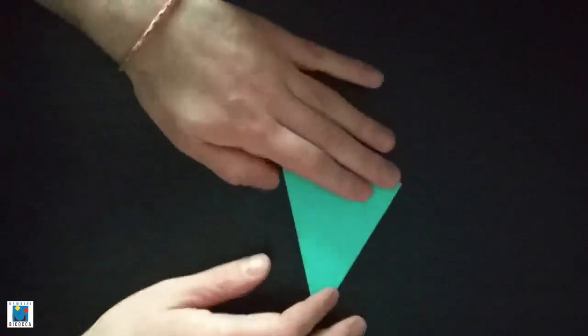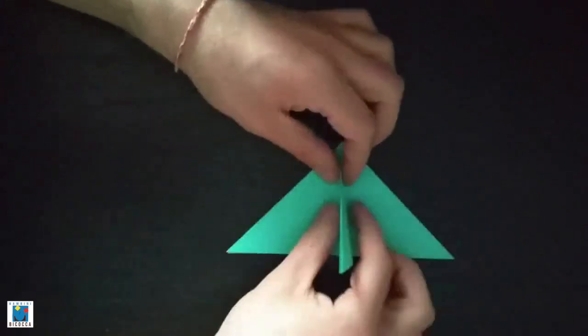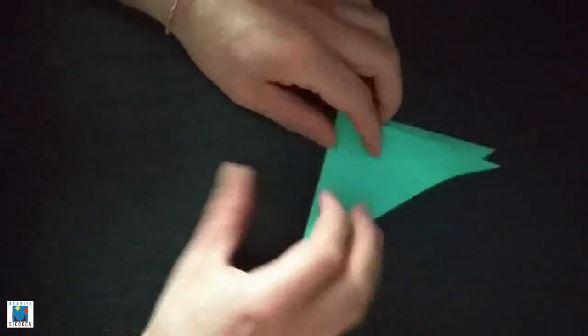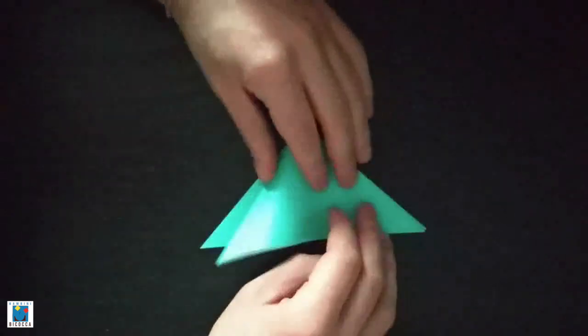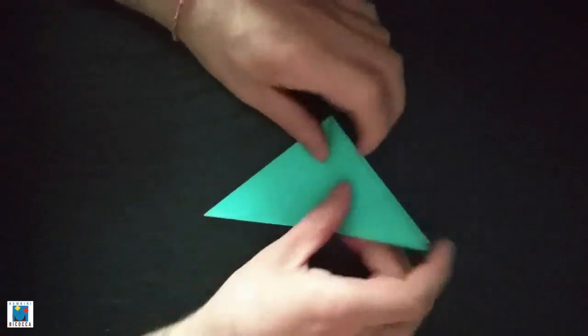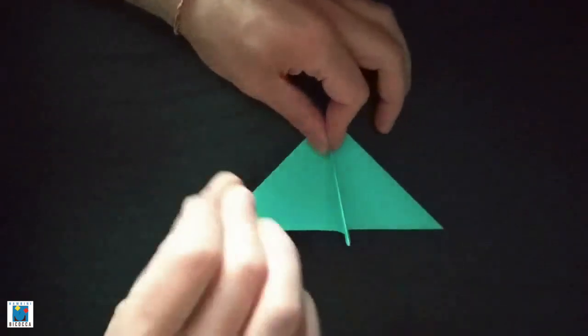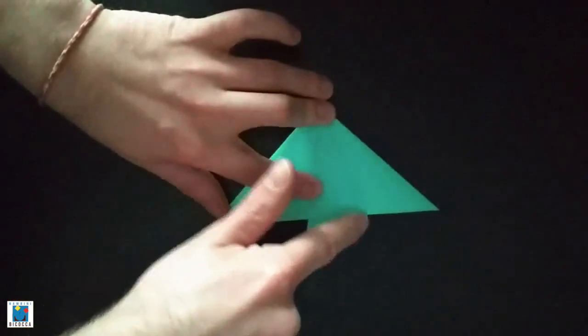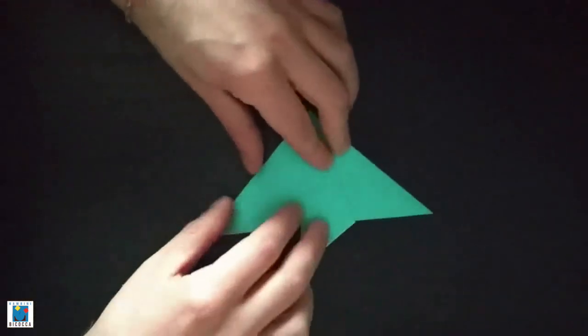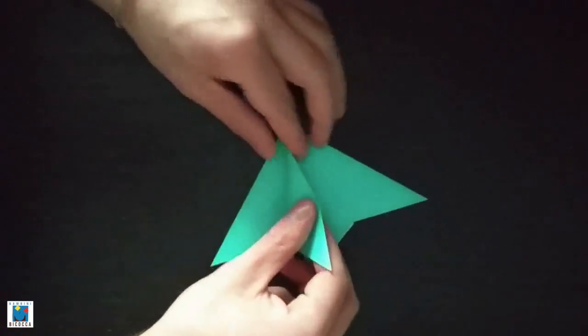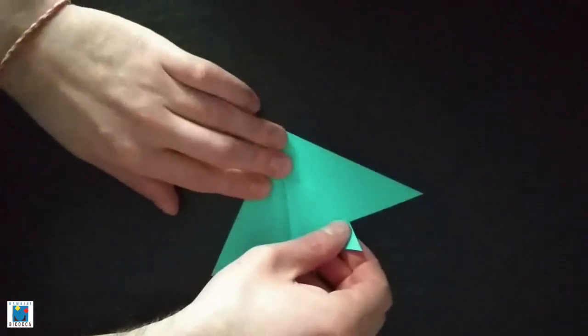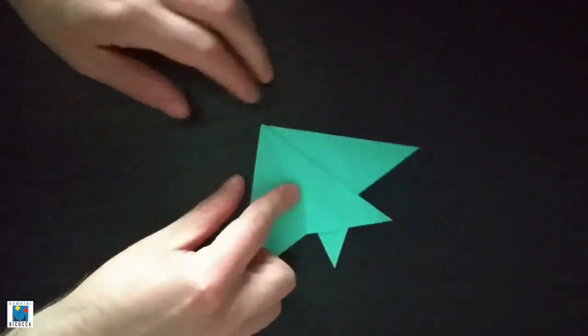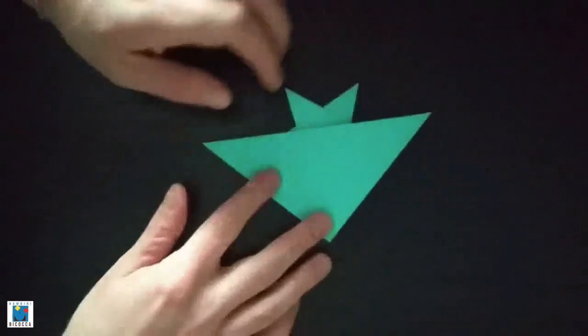It's almost done. Now, we have to take one piece of this paper. The one we prefer. This one or this one. It's the same. It doesn't matter. We're gonna take one side and we're gonna pull it down like this. And we're gonna squish it here. We're gonna take the opposite side and we're gonna pull it down. We're gonna repeat the same. And squish it. And this is it. Our fish is ready.